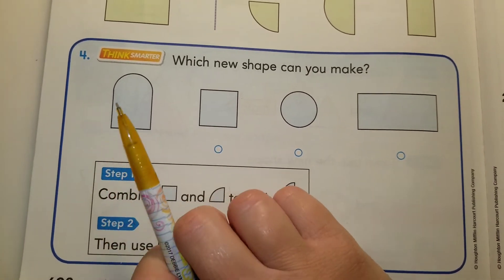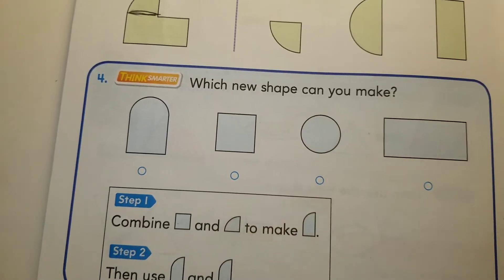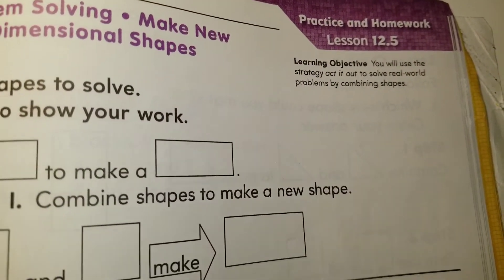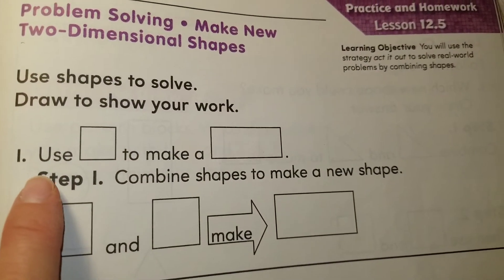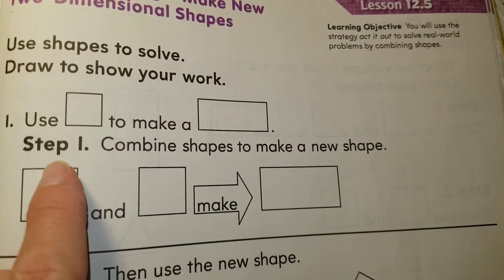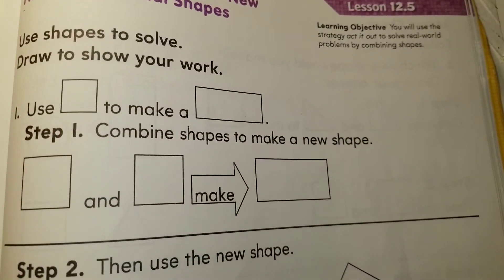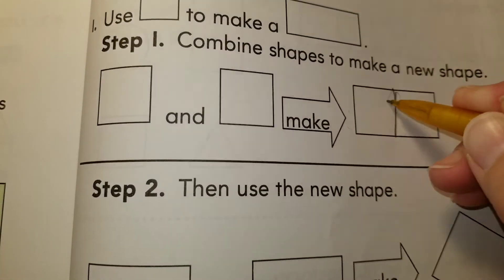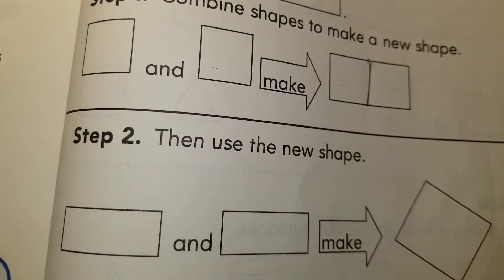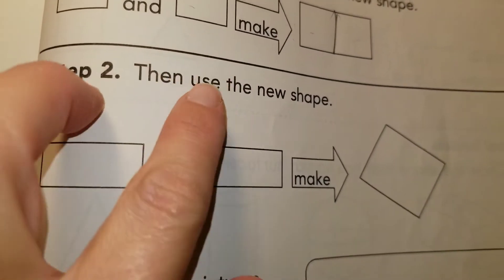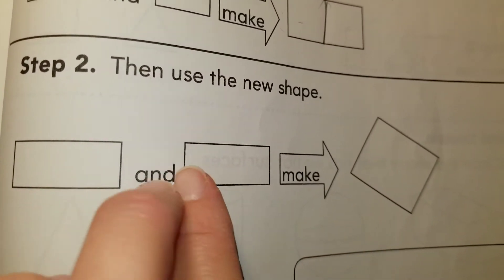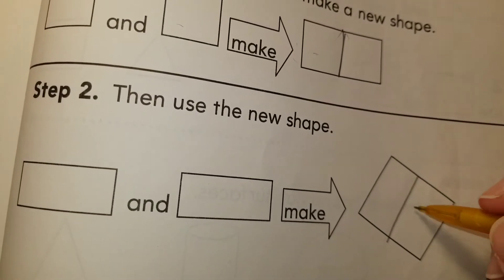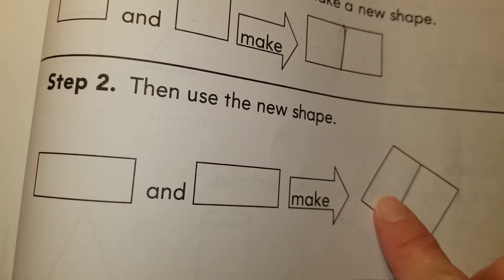We're done with lesson 12.5. Now let's see the homework. It says use squares to make a rectangle. Step one: combine two squares — they form a rectangle. Step two: use the new shape — double the rectangle. Put the two rectangles together. What do we get? We get a rhombus. We have two rectangles, put them together, and we get a rhombus. It also looks like a square.